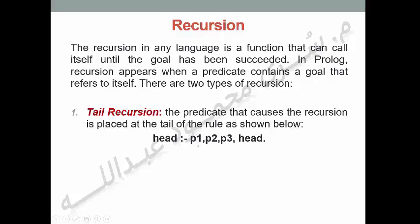هيكل التال ركيرجين: F, P1 وهي عبارة عن fact، فارزة P2 وهي عبارة عن fact، فارزة P3 وهي عبارة عن fact، فارزة head ويتم إنهاء الرول بنقطة. الرول أو البرديكيت head تحتاج إلى استدعاء نفسها عدة مرات لحين تحقيق الهدف، لذلك يتم وضع اسم rule أو البرديكيت head في نهاية الرول.